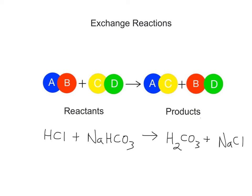An example of an exchange reaction is HCl, hydrochloric acid, a strong acid, plus NaHCO3, sodium bicarbonate, a strong base, yields H2CO3, carbonic acid, a weak acid, plus NaCl, sodium chloride, a salt. Notice how the components of the reactants switch partners with each other: hydrogen combines with bicarbonate to form carbonic acid, and sodium combines with chlorine to form sodium chloride.